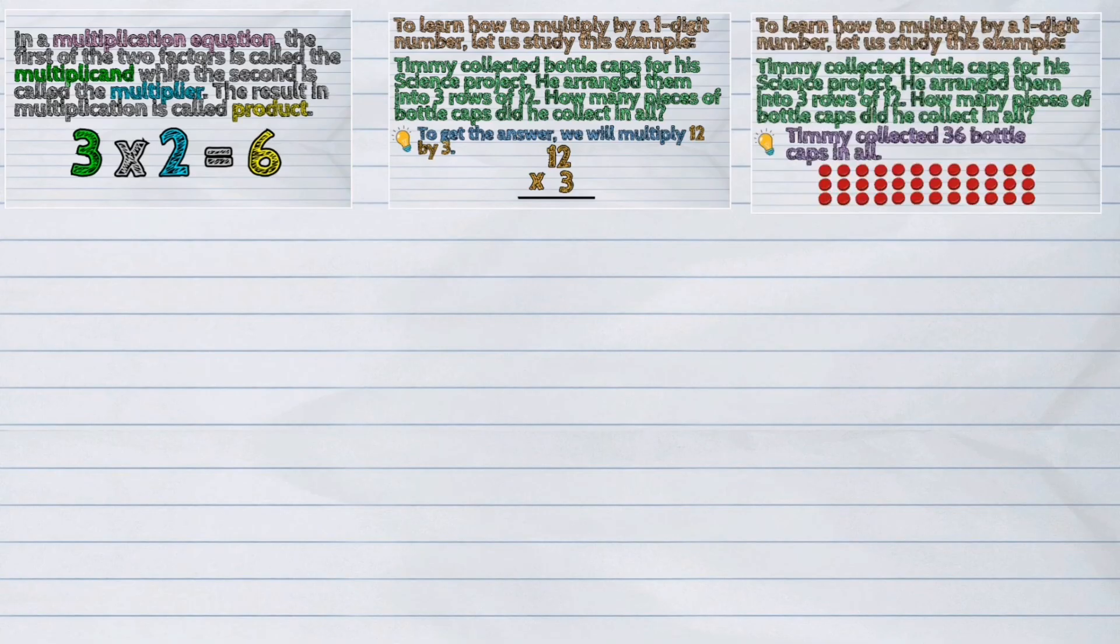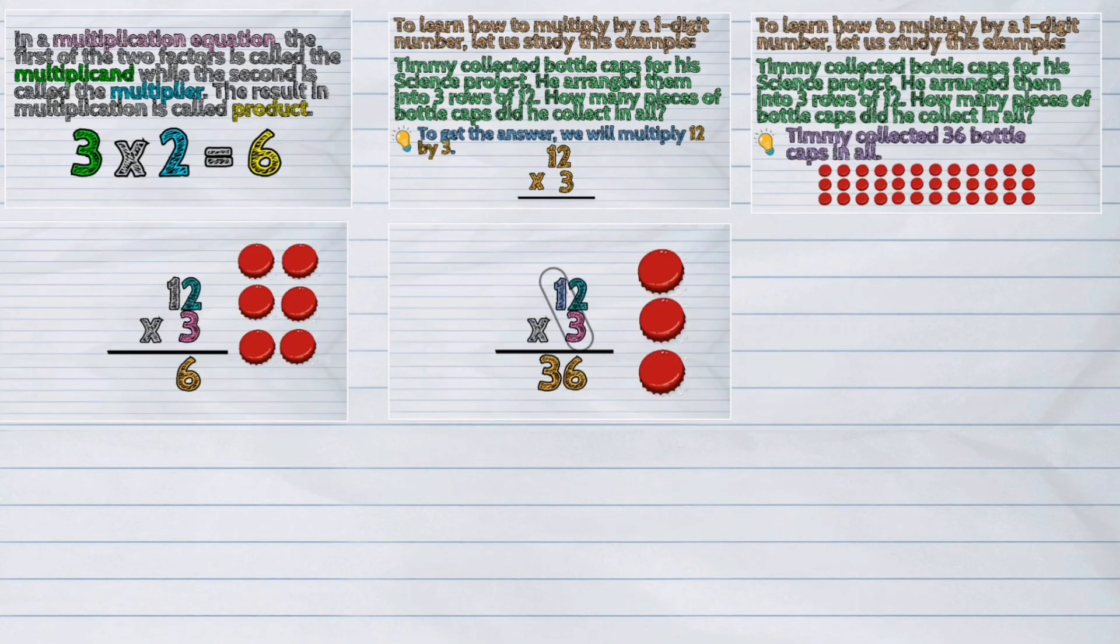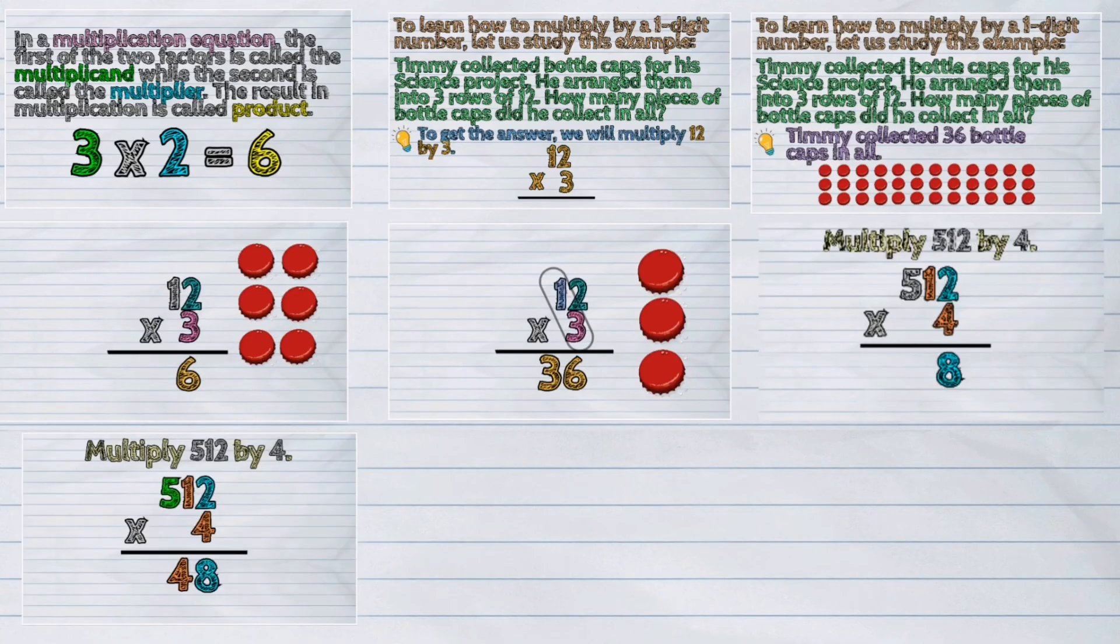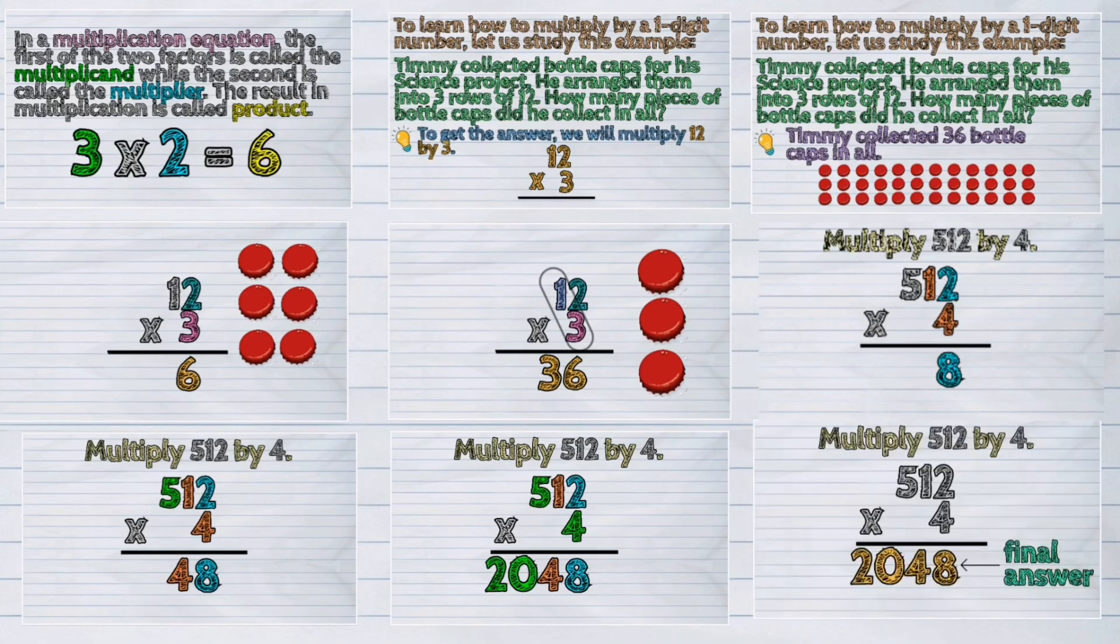And that was how we multiply by a one-digit number without regrouping. It is important that we familiarize ourselves with this basic skill so we wouldn't get confused with the larger digits in the next multiplication lessons.